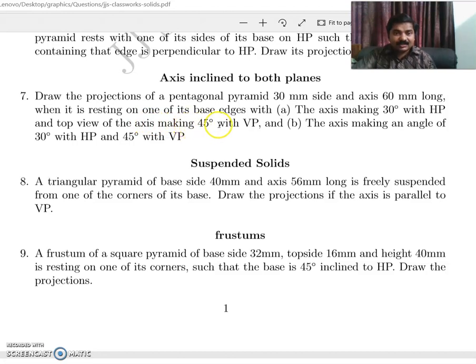The angle made by the top view of the axis with the VP, with XY line is given. The angle made by the top view of the axis with the XY line is given, that is beta equals 45 degrees. In part B this is phi only, so beta has to be found out. That's the difference.